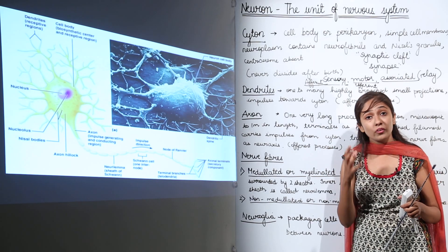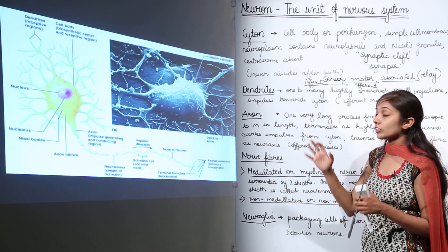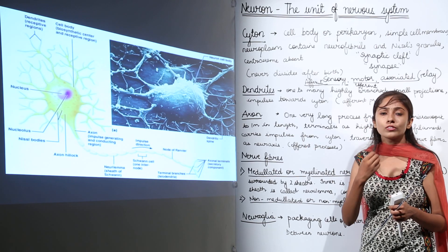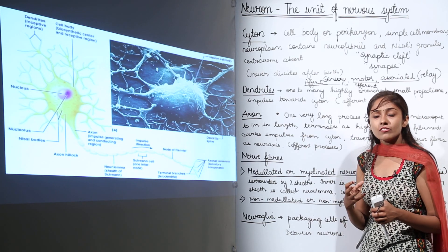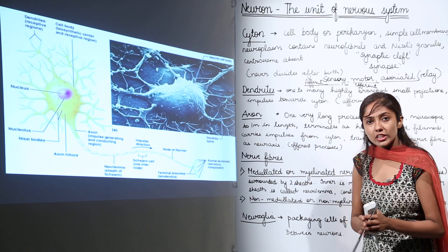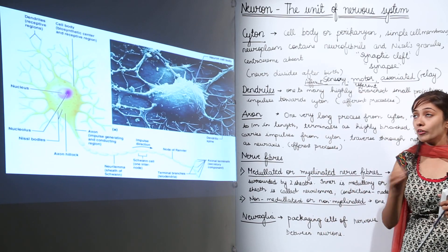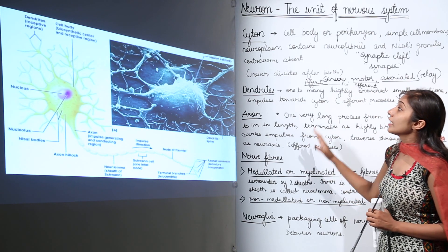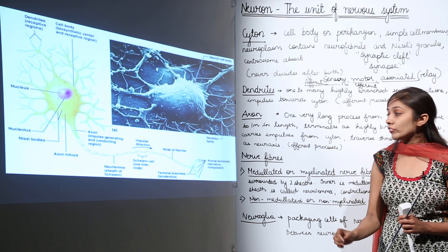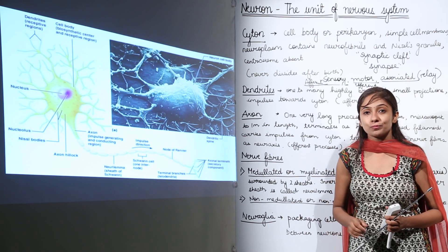Nerves arise from the brain and spinal cord and connect to all body parts. So nervous tissue is composed of neurons, nerve fibers, and neuroglia — and now the structure and function of each component should be clear.